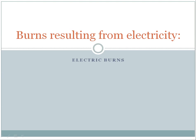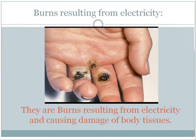In this lesson we are going to discuss electric burns. What is meant by an electric burn? An electric burn is a burn resulting from electricity causing damage to the body tissues. As you can see in the picture, the tissue or skin of this person is damaged, and the main cause of this damage is an electric burn.